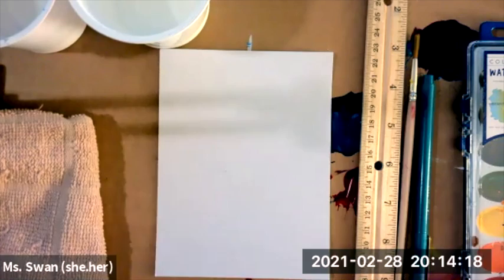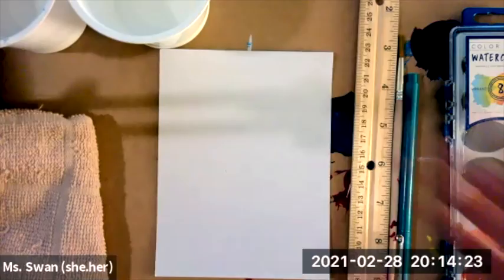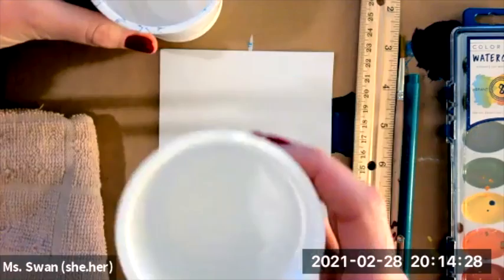You will need a ruler, your watercolor brush, a pen to write down what type of technique we're doing and two cups of water. This is really important.